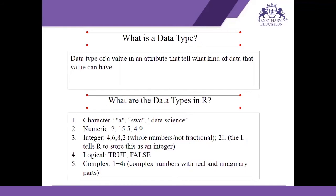Integers are whole numbers or non-fractional values like 4, 6, or 8. In R, we add a capital L to an integer number so that it is saved as an integer. Logical data type means the value is either true or false. Complex data type is a combination of a real and imaginary part.